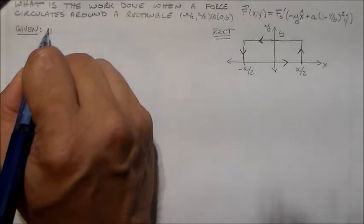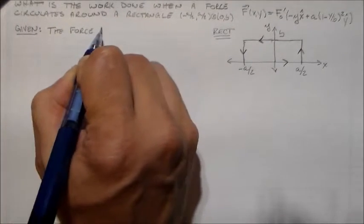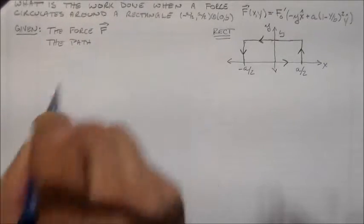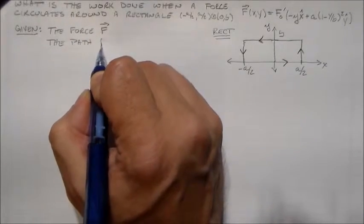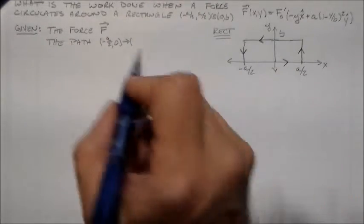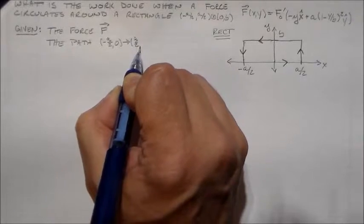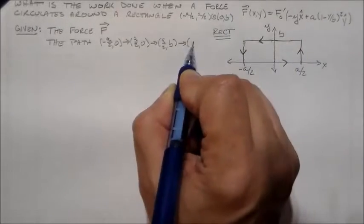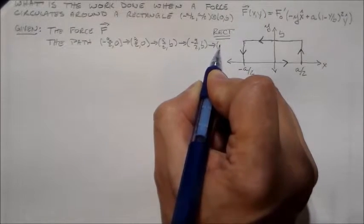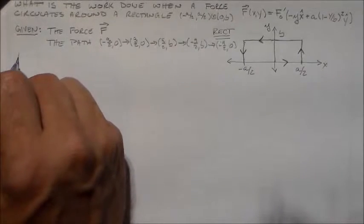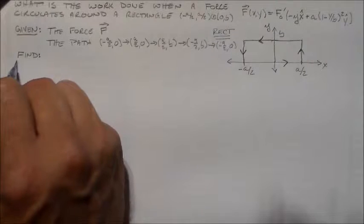So I'm given that force F, and I'm given a path. And the path has three parts, right? It goes minus a over 2 comma 0 to a over 2 comma 0 to a over 2 comma b to minus a over 2 comma b to minus a over 2 comma 0 again. And that's its cycle. And so we work out how much energy is lost per cycle in a lot of different instances.